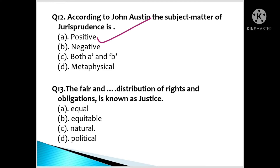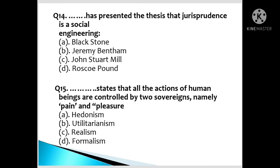Question number 13: The fair and equitable distribution of rights and obligations is known as? A. Equal, B. Equitable, C. Natural, D. Political. Question number 14: Who presented the thesis that jurisprudence is a social engineering? This question is very important and has been asked a lot. A. Blackstone, B. Jeremy Bentham, C. John Stuart Mill, D. Roscoe Pound.